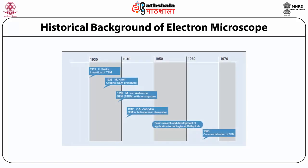The development of the scanning electron microscope began a few years after the invention of the transmission electron microscope by Knorr and Ruska in 1931. However, the commercialization of the scanning electron microscope required about 30 years.